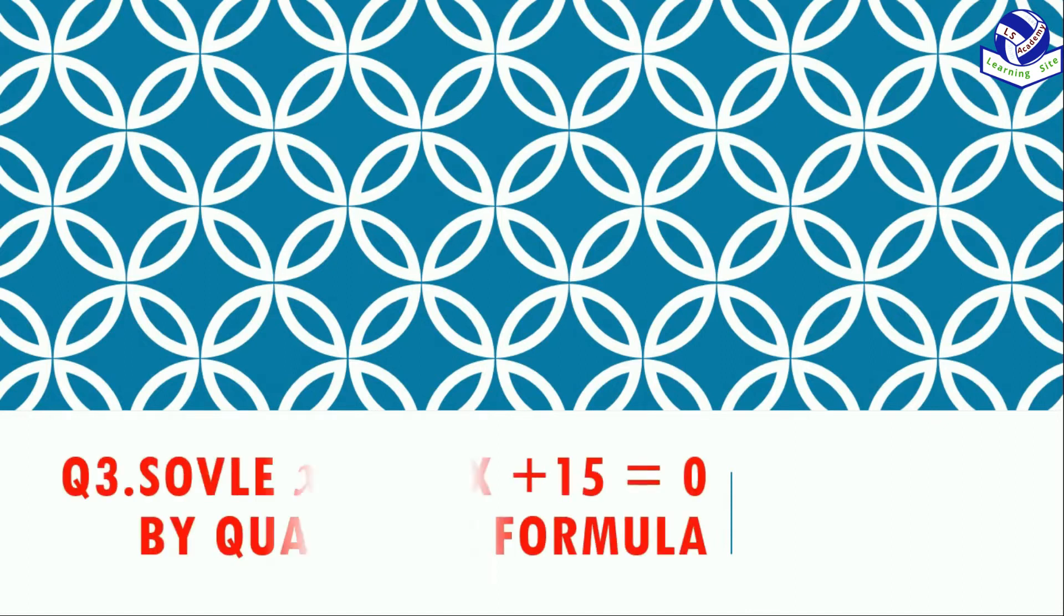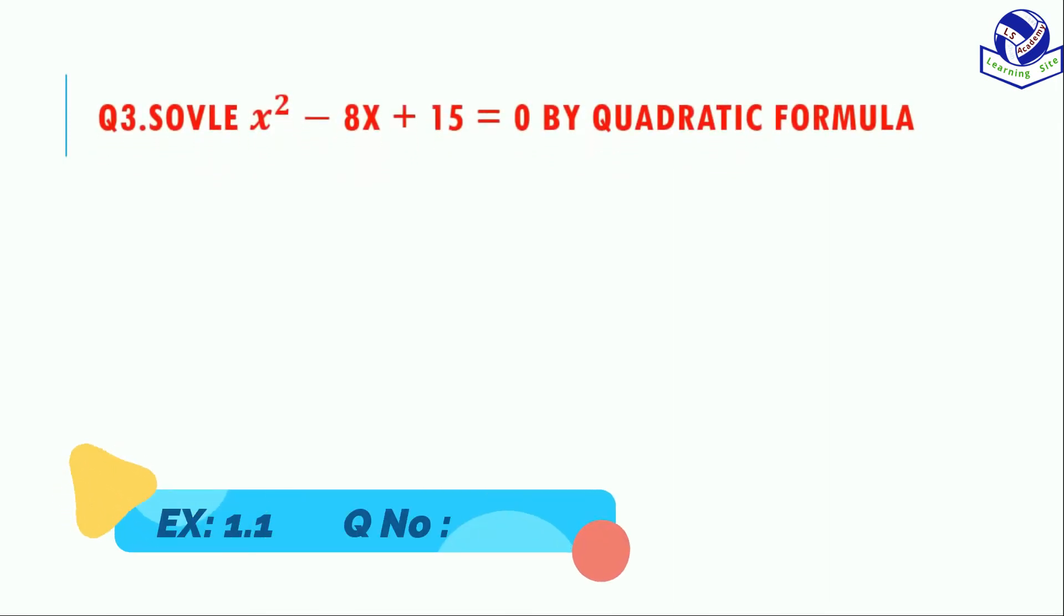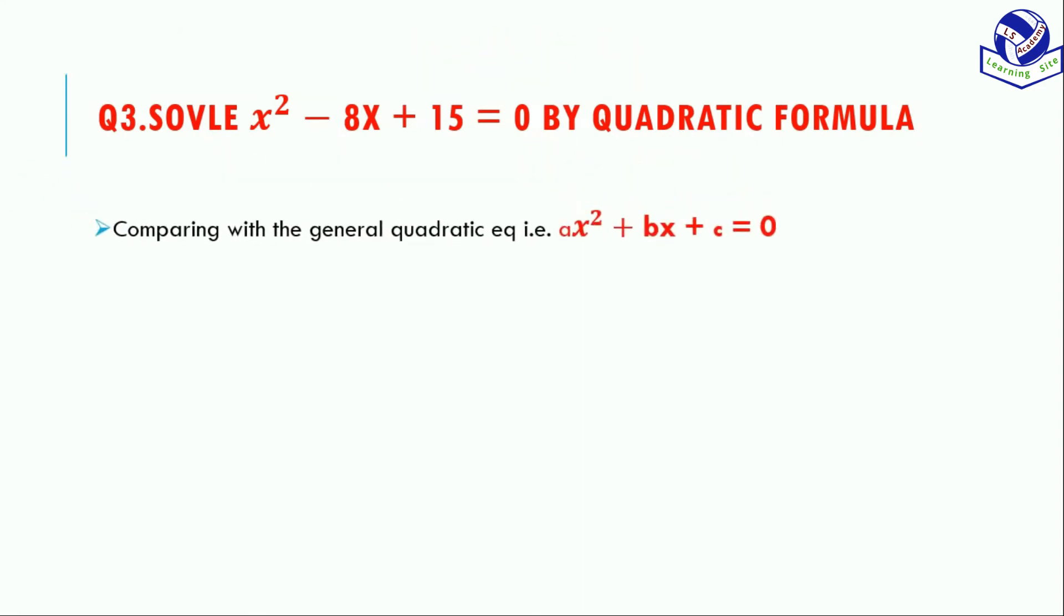Hey guys, welcome to Learning Site. Our job is to solve a quadratic equation through the quadratic formula. We have the equation from Exercise 1.1, Question Number 3, which is x² - 8x + 15 = 0. Let's solve it through the quadratic formula. The first step is to compare it with the general quadratic equation.